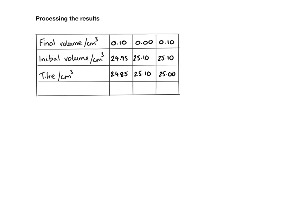Processing the results. The first thing to do is to make sure you indicate which are your concordant results, and then work out your average titre.